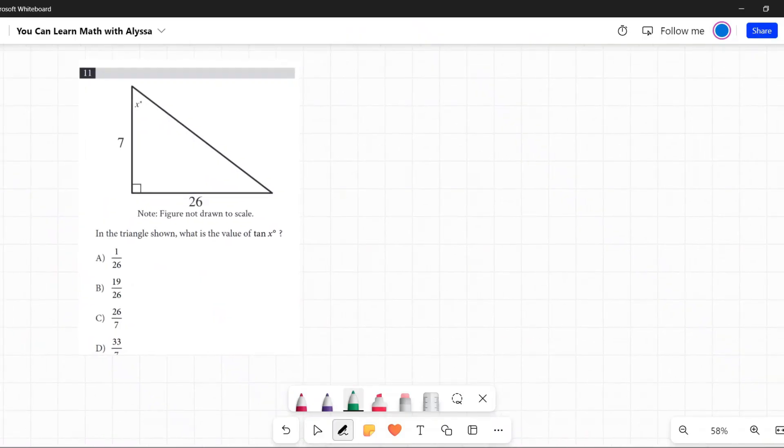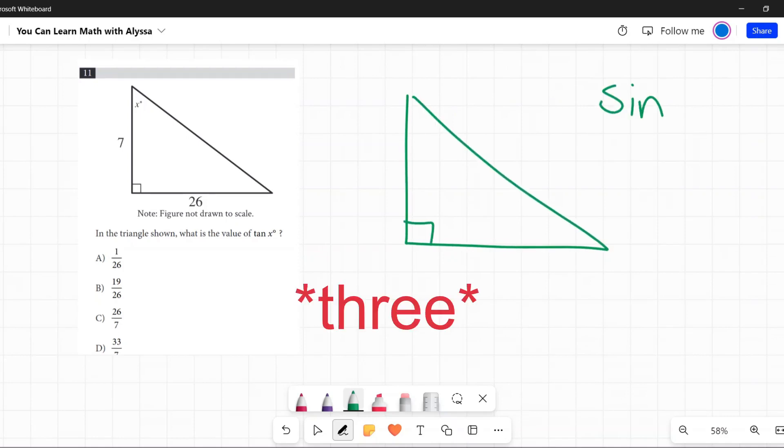Another figure not drawn to scale. In the triangle shown, what is the value of tangent of x? If I have a right triangle, there's four identities that are likely to ask you about.